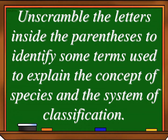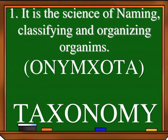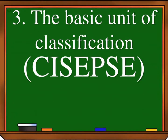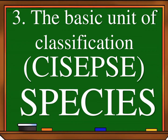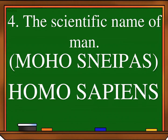Unscramble the letters inside the parentheses to identify some terms used to explain the concept of species and the system of classification. Number one: it is the science of naming, classifying, and organizing organisms. The answer is taxonomy. Second: the largest category into which organisms have been classified. The answer is domain. Number three: the basic unit of classification. The answer is species. And number four: the scientific name of man. The answer is homo sapiens.